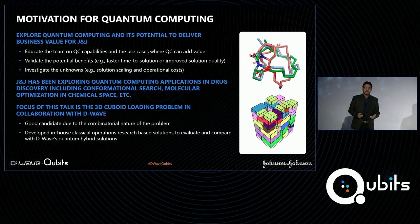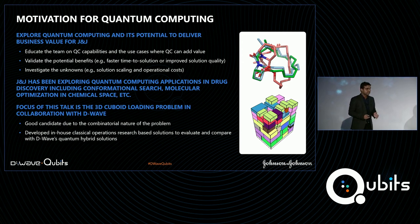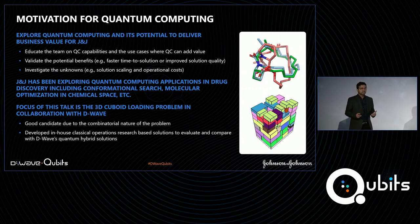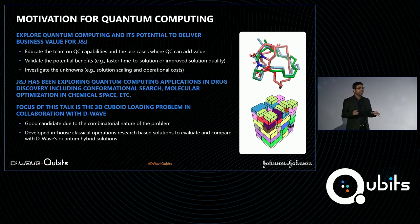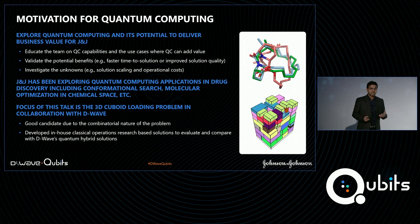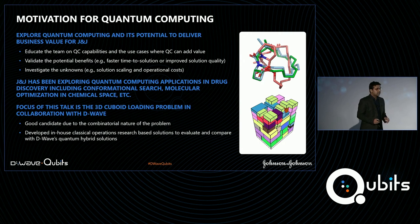The idea was to educate our team about the potential of quantum computing and validate its potential benefits in terms of solution performance, computation time, and how performance scales with increasing problem size and complex constraints. Within J&J, different organizations are already exploring quantum computing in other applications such as drug discovery, conformational search, and molecular optimization in chemical space, but the focus of this collaboration is the 3D cuboid loading problem.